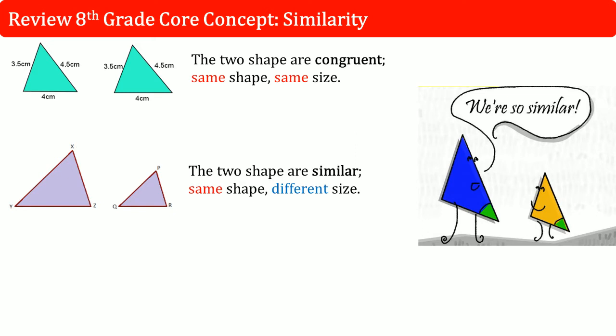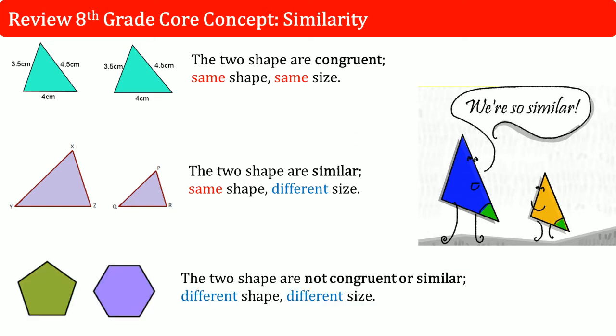For something to be similar, they have to have the same shape, but they don't have to be the same size. Here you see that these two triangles are the same shape, but they are different size. Triangle YXZ is bigger than triangle QPR. When two shapes are not congruent or similar, that is when they have different shapes and different sizes. Here the green is a pentagon and the purple is a hexagon.